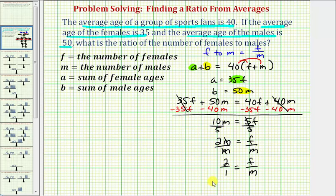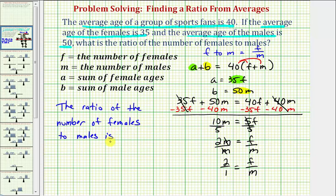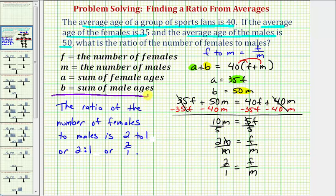Now let's go ahead and write this out as a complete sentence. The ratio of the number of females to males is — remember a ratio can be written three ways. We could say the ratio is 2 to 1, or we could say 2 colon 1, or we could say in fraction form 2 over 1. These are three different ways to write the same ratio. I hope you found this helpful.